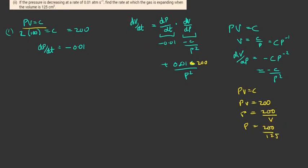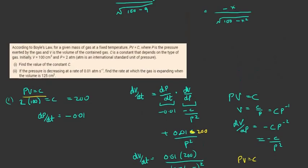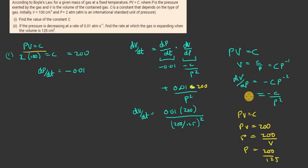So dv dt is equal to 0.01 by 200 divided by p squared, which is going to give me 200 divided by 125 squared. And that's the answer to that one. So you can see there was rearranging a variable to express one in terms of another. There was getting the initial partial derivative that was constant dp dt to the minus 0.01, and then follow it through. And I hope that helped.